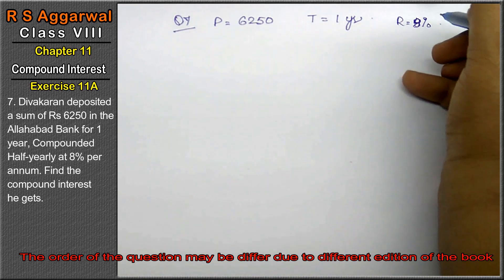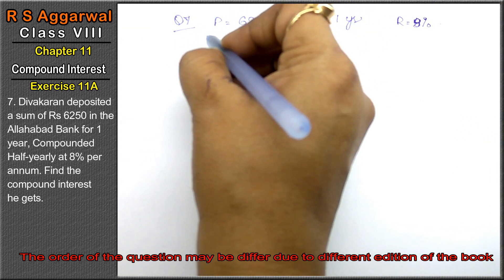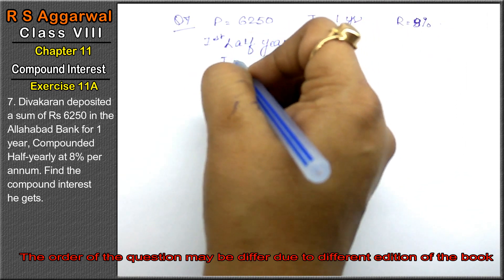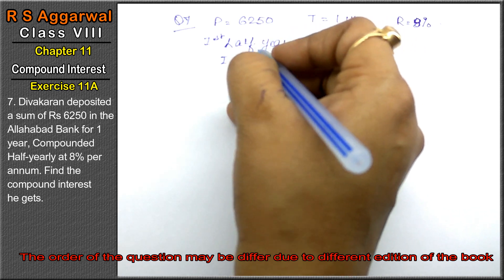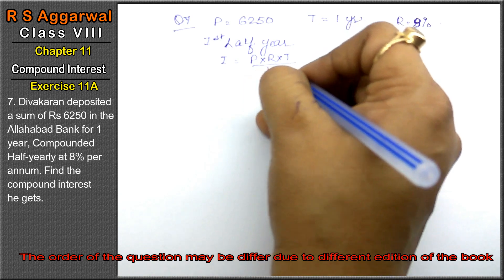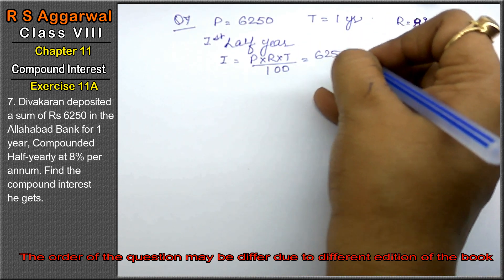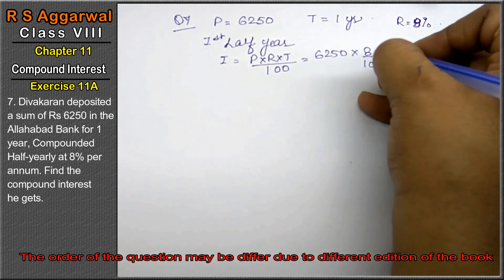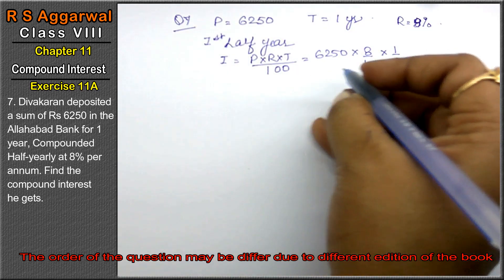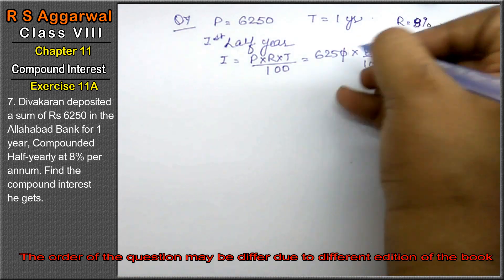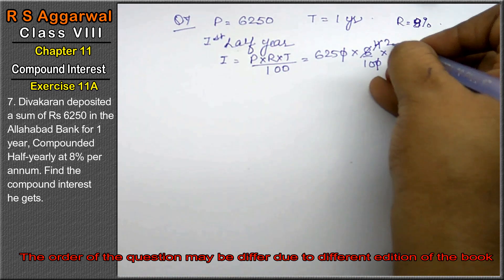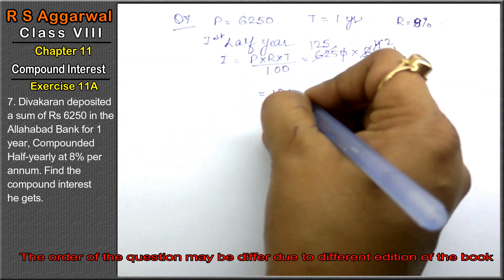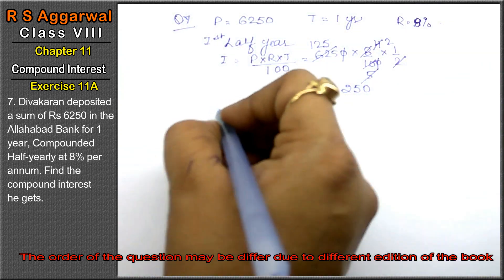Since it is compounded half-yearly, we find each half year separately. First half year interest: P into R into T upon 100 equals 6,250 into 8 upon 100 into 1/2. After cancellation, we get 125 into 2, that is 250. Amount equals 6,250 plus 250, that is 6,500.